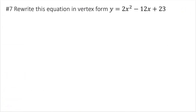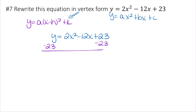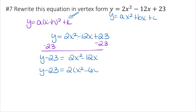Now convert this equation to vertex form. It's currently in standard form: y equals ax squared plus bx plus c. We'll use completing the square. Rewriting: y equals 2x squared minus 12x plus 23. First, subtract 23 from both sides to get y minus 23 equals 2x squared minus 12x. Then factor out the 2 so x squared has no coefficient: y minus 23 equals 2 times x squared minus 6x.